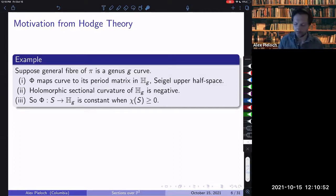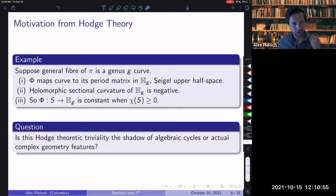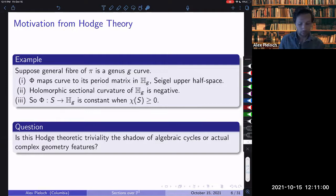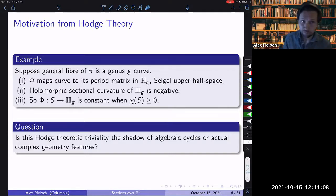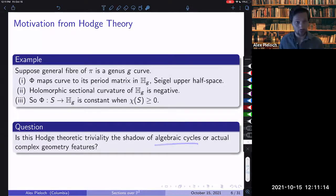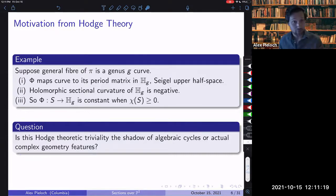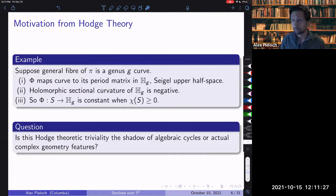The question that always arises whenever you have some Hodge-theoretic feature is whether it is the shadow of actual algebraic cycles or complex geometric features of your space. We are constructing algebraic cycles — namely these sections and multisections — and we are constraining the actual geometry of these spaces. In particular, for these spaces to fiber over P1 in this manner, they have to be uniruled. This is the algebraic geometric motivation for this question.